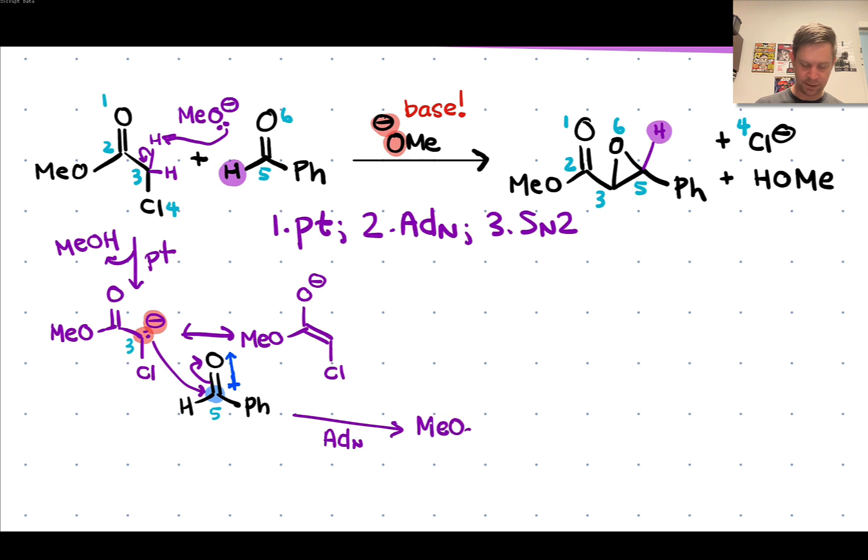To save myself time, I'm going to abbreviate that ester group as CO2Me. The chlorine is still there. We've made a bond between C3 and C5. Negative charge at this oxygen now. The H and phenyl are still connected to C5. To review our numbering: we have carbonyl 1, carbonyl carbon 2, carbon 3, the chlorine is still there, we made the bond to C5, and oxygen 6 is right here.